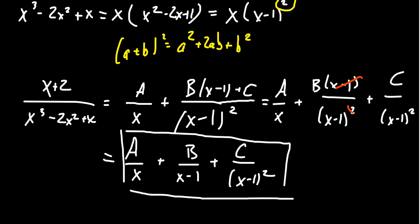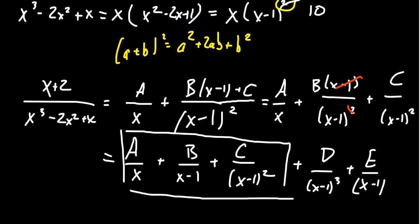This pattern generalizes: if the denominator had (x-1)^10, we'd include terms d/(x-1)³, e/(x-1)⁴, continuing up to a term over (x-1)^10 — one fraction for each power from 1 up to the highest power present.